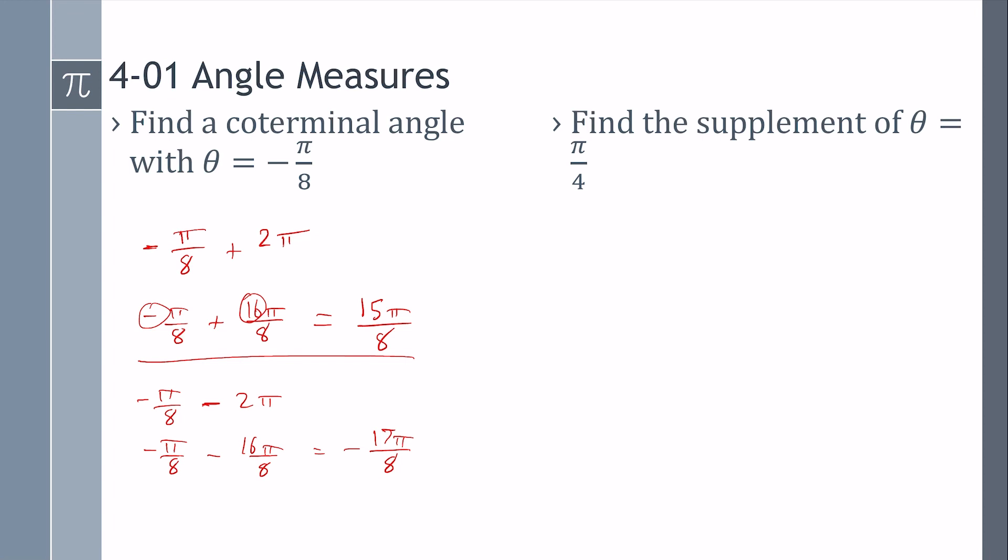Find a supplement of pi over 4. Again, this is radians. Supplements are two angles that add together to make pi radians. So, if one of them is pi over 4, what's the other? Well, we would subtract. We need a common denominator. So, 4 pi minus 1 pi would be 3 pi over 4.